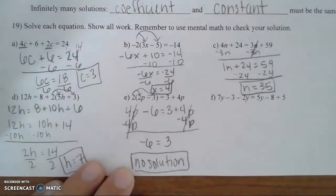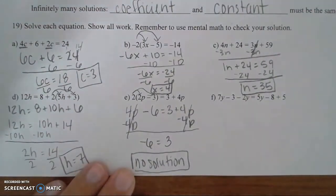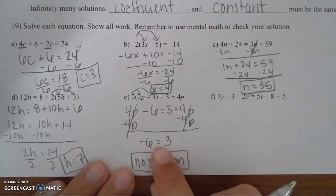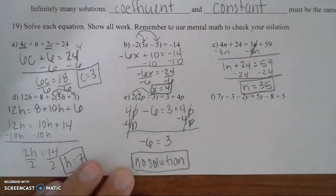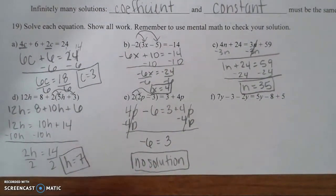You must write 'no solution' — you can't just leave the cancelled expression as your answer. You have to state that this gives no solution.